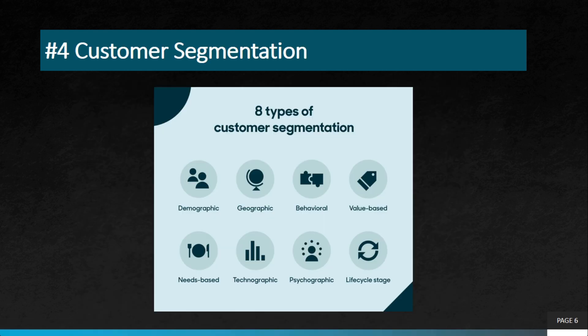The next project is customer segmentation. As you can see on the screen, there are eight types of customer segmentation where you can divide customers based on various parameters, including location, behavior, needs, and lifestyle. These segmentations require machine learning to analyze customer data and group them into segments based on their behavior, preferences, and demographics. This helps businesses create personalized marketing campaigns and improve customer engagement.